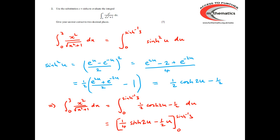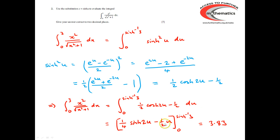With limits 0 and sinh⁻¹(3), evaluating gives 3.83. The mark scheme: the first four marks were for moving from the original integral down to the sinh²(u) integral; another two marks for handling the integral of sinh²(u) and reaching ¼ sinh(2u) minus ½u; and finally an answer mark for obtaining the correct value at the end of the question.